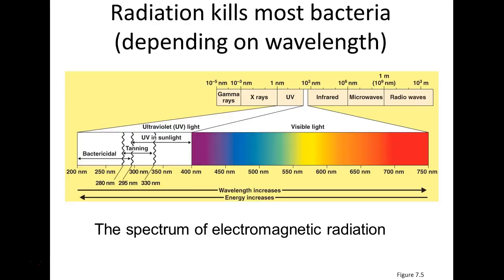Radiation is another effective way of getting microbes to die. Here we have a diagram from your text — figure 7.5 — showing the spectrum of electromagnetic radiation, including visible light. This scale shows the full spectrum from visible light to ultraviolet, infrared, x-rays, microwaves, gamma rays, and radio waves. The strongest wavelengths are the ones with the shortest wavelengths: UV, followed by x-rays, and the strongest of all are gamma rays.